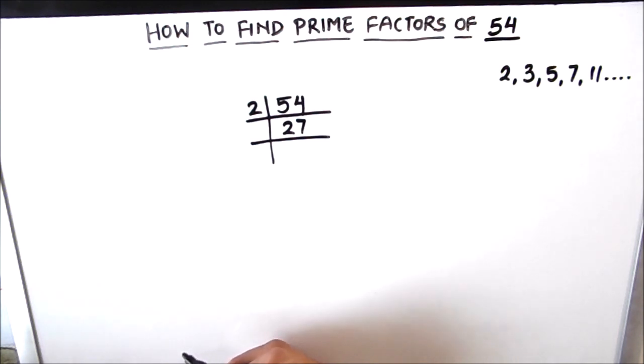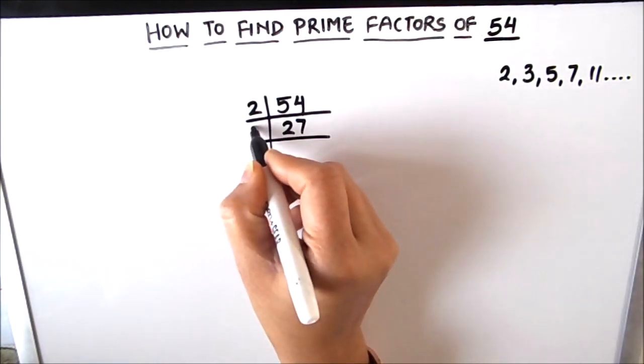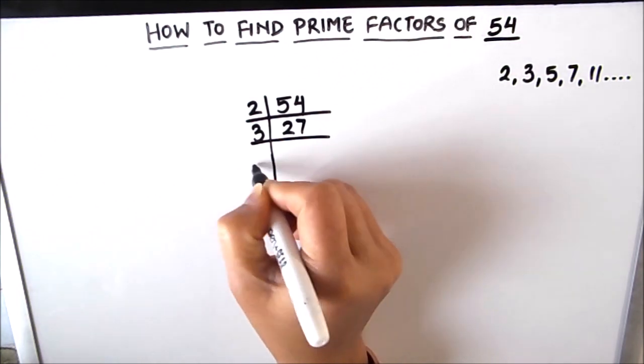Now 27 is an odd number. Let's try dividing it by number 3. So 3 times 9 is 27.